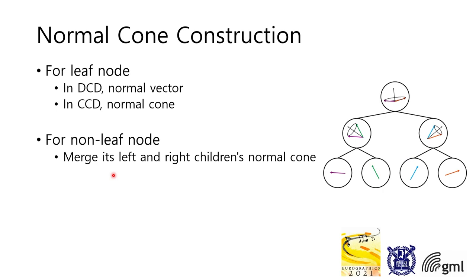To construct normal cone hierarchy, in the context of discrete collision detection, the leaf node has a single vector. In the context of continuous collision detection, the leaf node has a normal cone in consideration of the time variable.